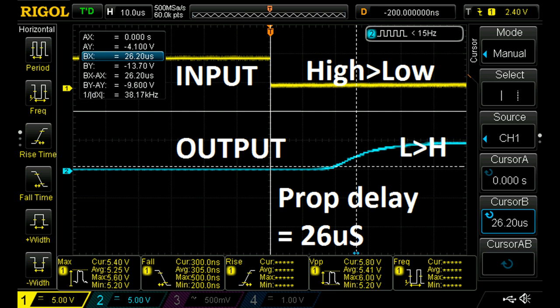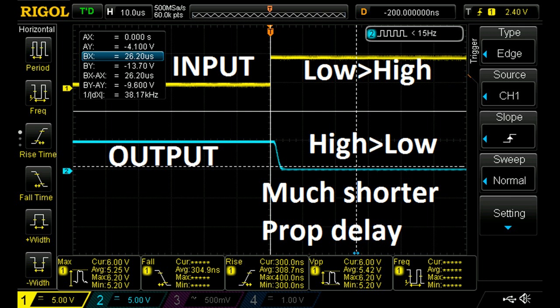Here's a look at the worst case timing, which is when the input shuts off the LED and the output turns on or gets pulled up by the resistor. It's a very slow transition about 26 microseconds. The transition in the other direction is much quicker.